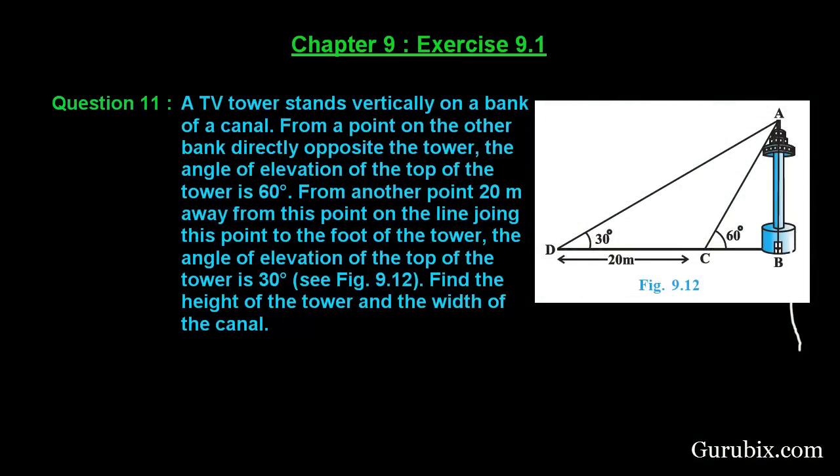Welcome friends. Let us solve question number 11 of Exercise 9.1 of Chapter 9. The question says: a TV tower stands vertically on a bank of a canal. From a point on the other bank directly opposite the tower, the angle of elevation of the top of the tower is 60 degrees, and from another point 20 meters away from this point on the line joining this point to the foot of the tower, the angle of elevation of the top is 30 degrees. Find the height of the tower and width of the canal.